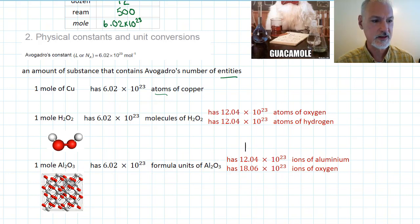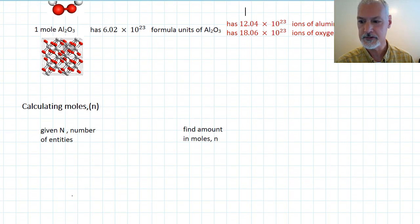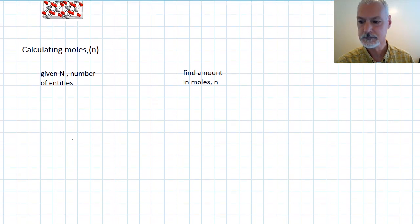Let's look at how one calculates moles from a couple of different perspectives. If you're given a number of particles and you're asked to find out how many moles there are present, one simply needs to take that number of particles, n, and divide it by Avogadro's number, and that would give you the number of moles.